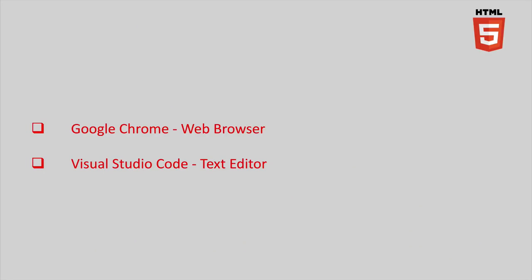In order to do any kind of web development, we'll need two things: a text editor to create our project and a web browser to test our results. This course will use Google Chrome as our web browser and Visual Studio Code as our text editor. Both are industry leaders and the first to implement new features, improving our workflow. They're both free and require a simple download. If you want the same exact results during the course, I'd suggest downloading these two tools.